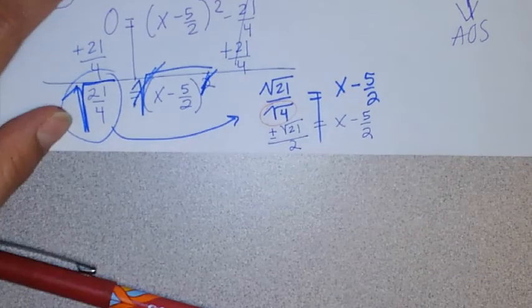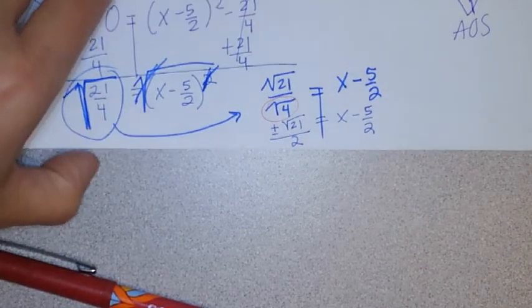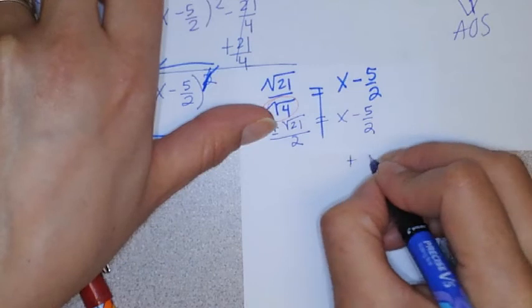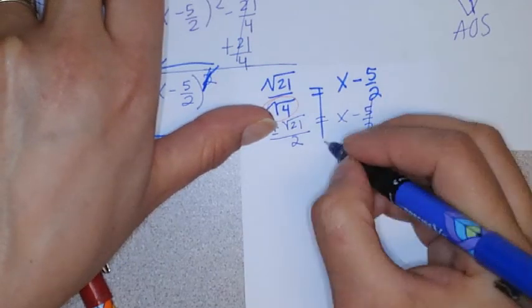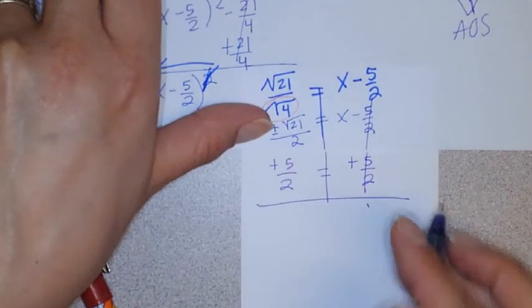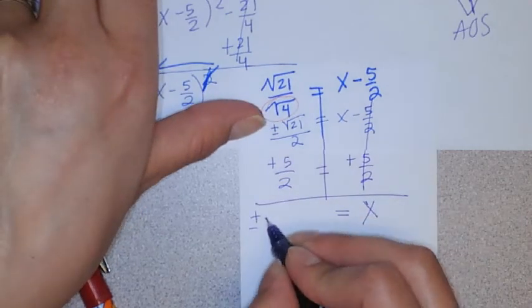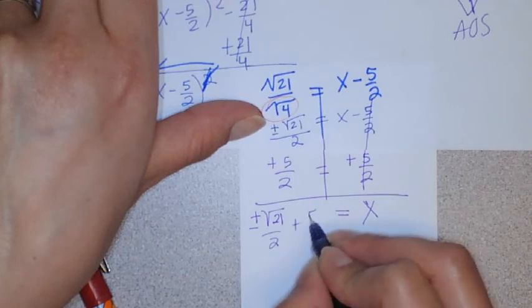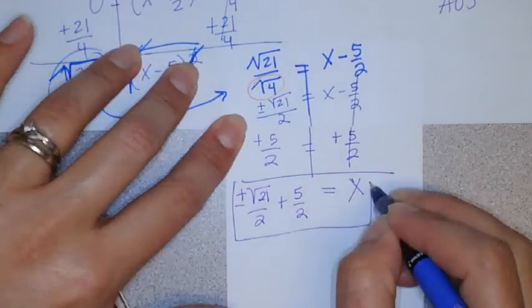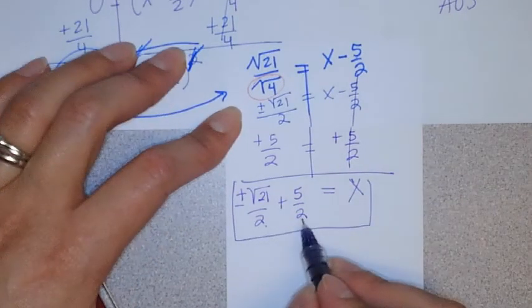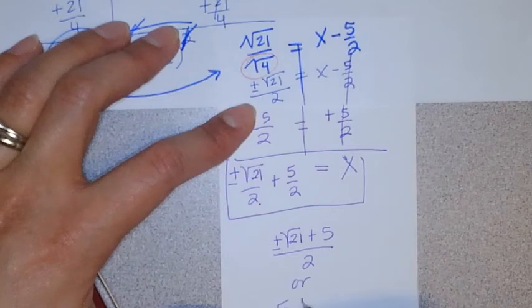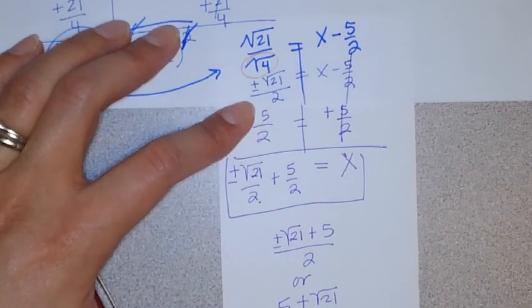And now from here, I would just have to move the 5 halves over. So plus 5 halves, plus 5 halves. We can leave it like this. We can also write it like this, or you can write it like this. All of these are correct.